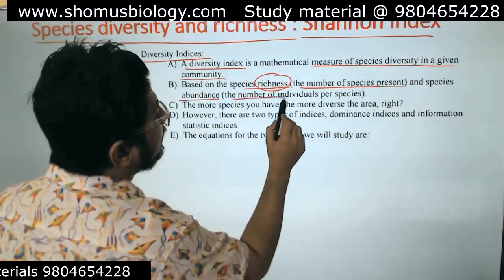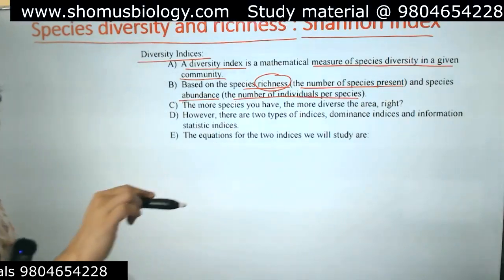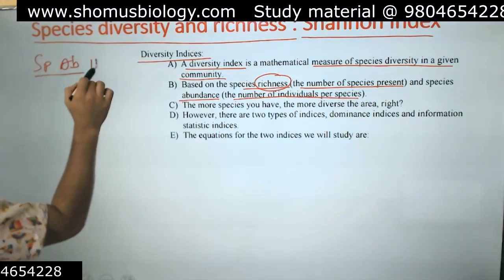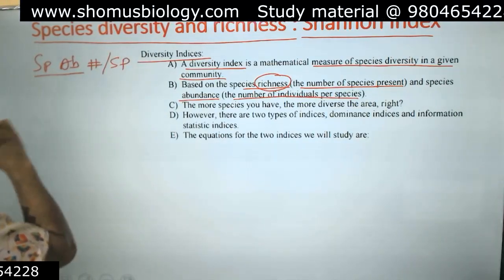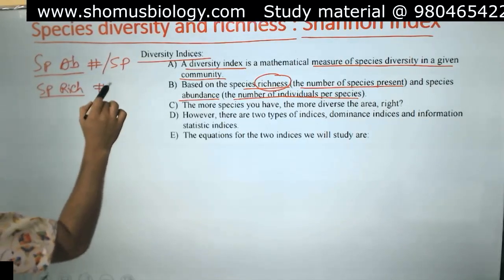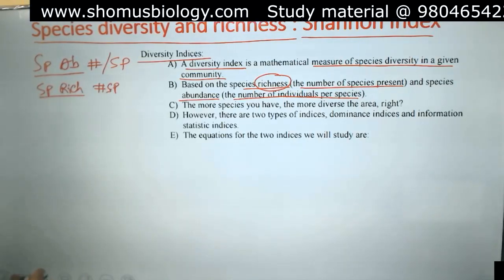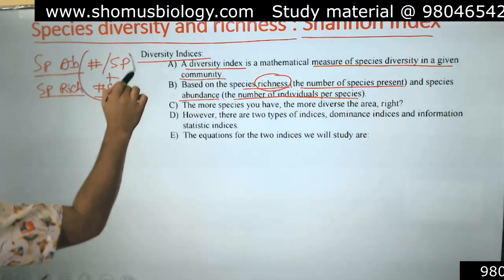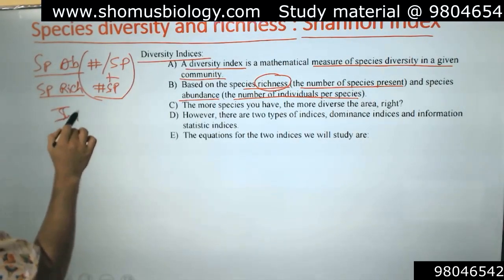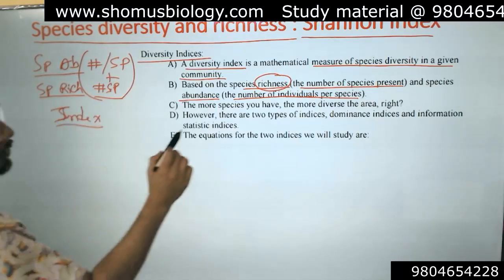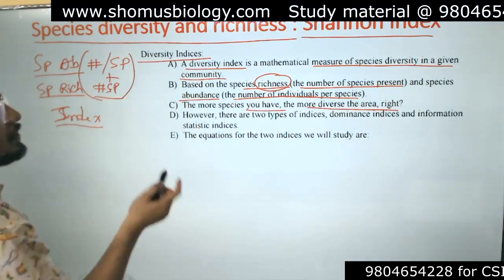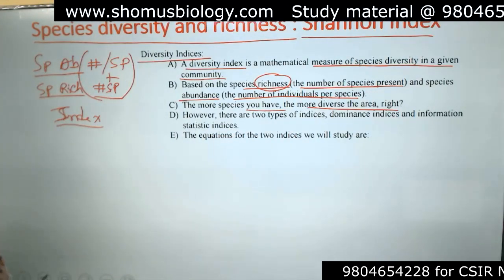Species richness is the number of species present, and species abundance is the number of individuals per species. When you add them together you get the total diversity index. The more species you have, the more diverse the area; the more individuals belonging to the same species are present, the more diverse that area.